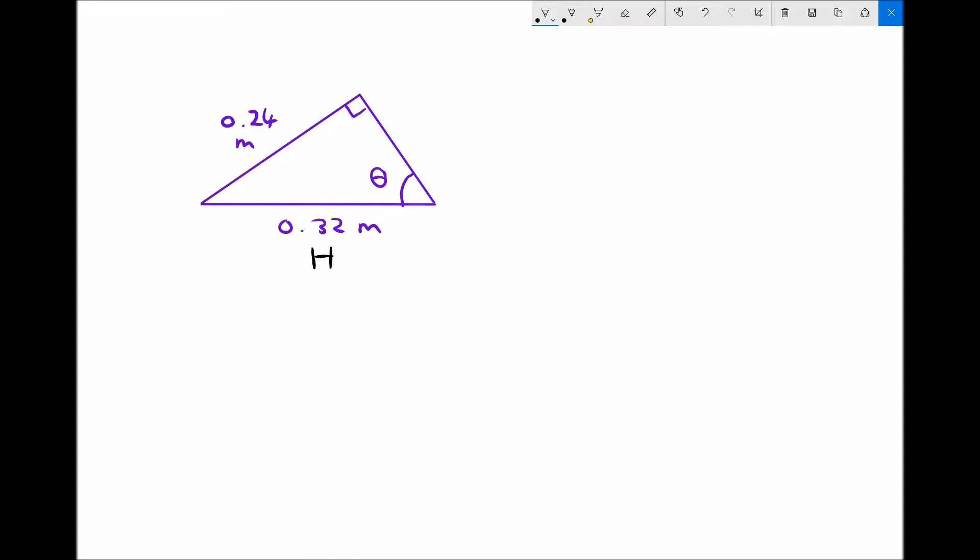The side opposite the angle that we're given, or that we're trying to find, is the opposite. In this case, we're trying to find the angle theta, so that's the angle that's involved in our calculations. And the remaining side is our adjacent.